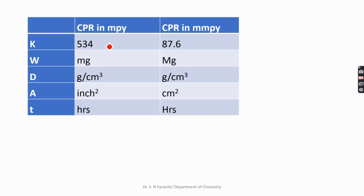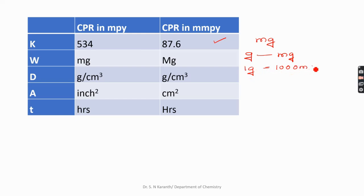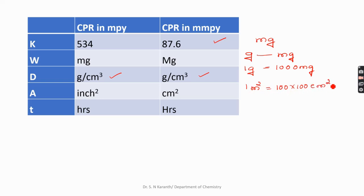For CPR in MPY, K is 534; for MMPY, K is 87.6. W is always expressed in milligrams — if given in grams, convert using 1 gram = 1000 milligrams. Density is always expressed in grams per cm³. Area is expressed in inch square for MPY and in centimeter square for MMPY. If area is given in meter square and you need cm square, multiply by 100 × 100.